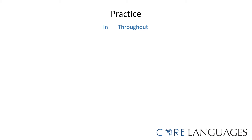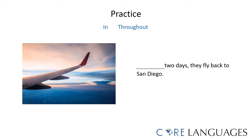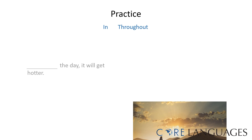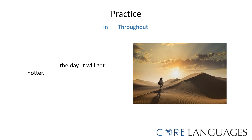Look at the following examples and try to choose between the prepositions 'in' and 'throughout' to complete the prepositional or adverbial phrase, and try to determine the purpose of the phrase. In two days they fly back to San Diego — or throughout two days they fly back to San Diego? The phrase 'in two days' helps us express when they fly back. How about: in the day it will get hotter, or throughout the day it will get hotter? The correct preposition is 'throughout' — throughout the day it will get hotter — and this phrase helps us express when it will get hotter.